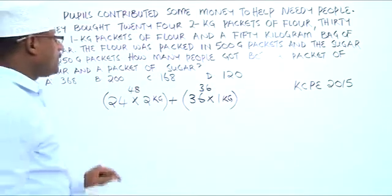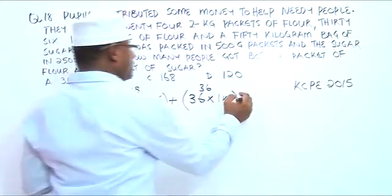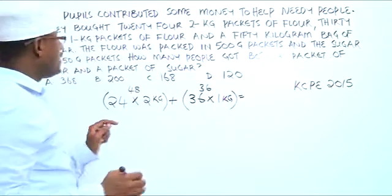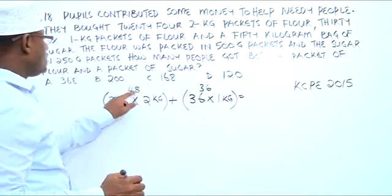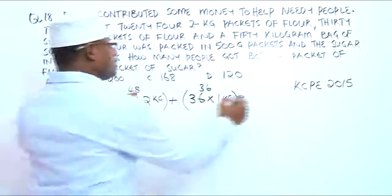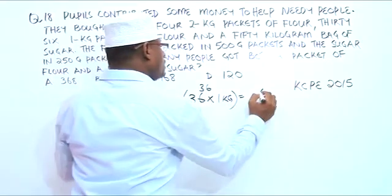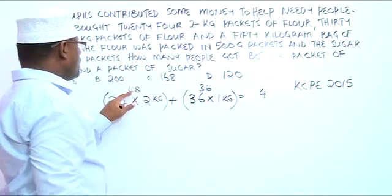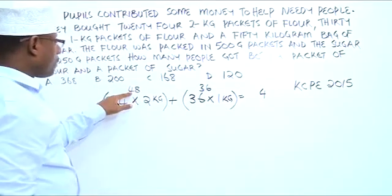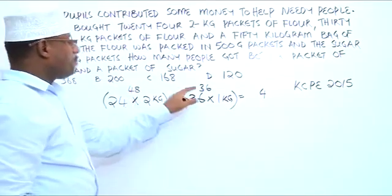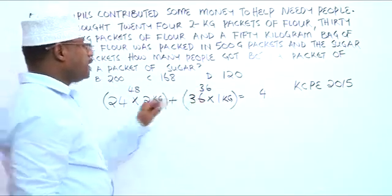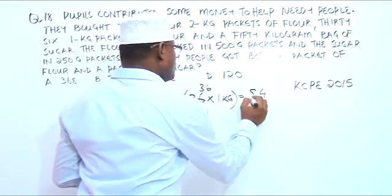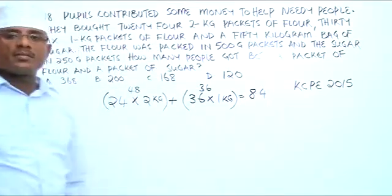So the total kilograms we have for flour: 8 plus 6 is 14, 1 plus 4 is 5, 5 plus 3 is 8. So we have 84 kilograms of flour.